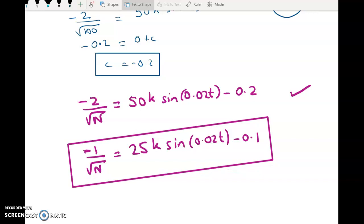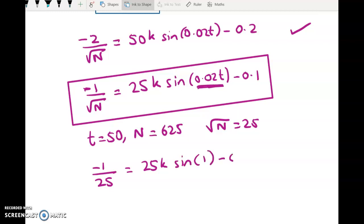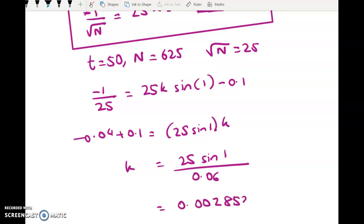So that's still pretty ugly as DE solutions go, but that's fine for us now to substitute in the next value, which is T equals 50 and N equals 625. So the square root of N will be 25. That gives me negative 1 over 25 equals 25K sine of 0.02 times 50, so sine of 1 minus 0.1. Negative 0.04 plus 0.1 equals 25 sine 1 times K. So K equals whatever that number was divided by 0.06. So K works out to be 0.002852.